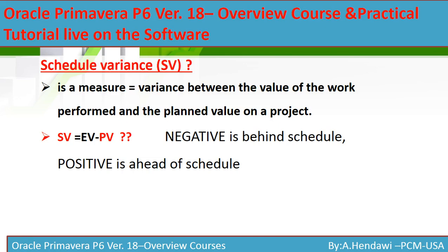Schedule Variance (SV) is a measure between the value of work performed and the value of work planned. SV equals Earned Value minus Planned Value. All variances start with Earned Value, then minus the actuals or plan. If SV is negative, you are behind schedule; if positive, you are ahead of schedule — meaning what you have earned is more than what you have planned.